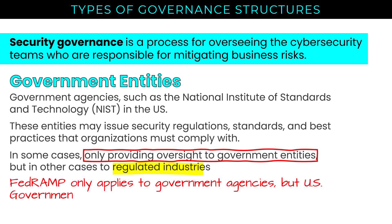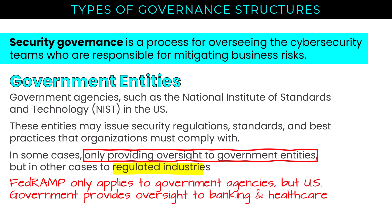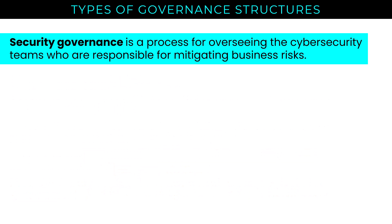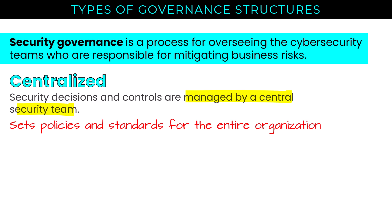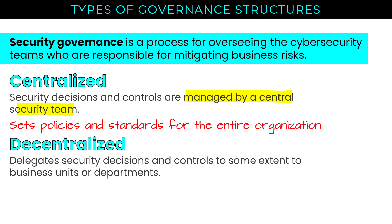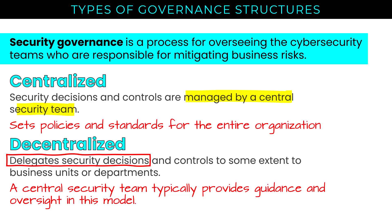For example, FedRAMP only applies to government agencies. The U.S. government provides oversight to the banking and healthcare industries. The NIST Risk Management Framework applies to government agencies and is mandatory. The NIST Cybersecurity Framework is designed for commercial, non-government entities and is optional. Government entities' purview really varies by scenario. In a centralized structure, security decisions and controls are managed by a central security team that sets policies and standards for the entire organization. In a decentralized structure, security decisions and controls are delegated to some extent to business units or departments, though a central security team typically still provides guidance and oversight.